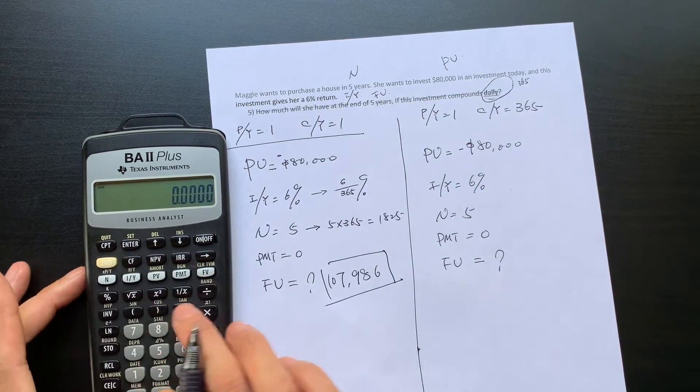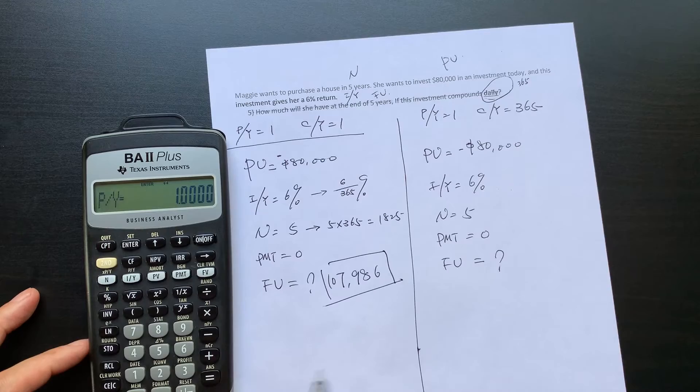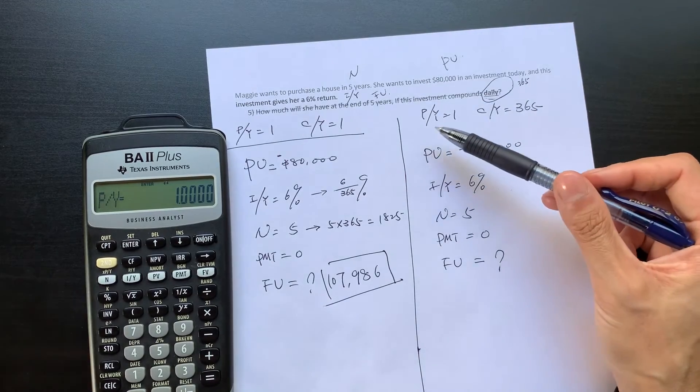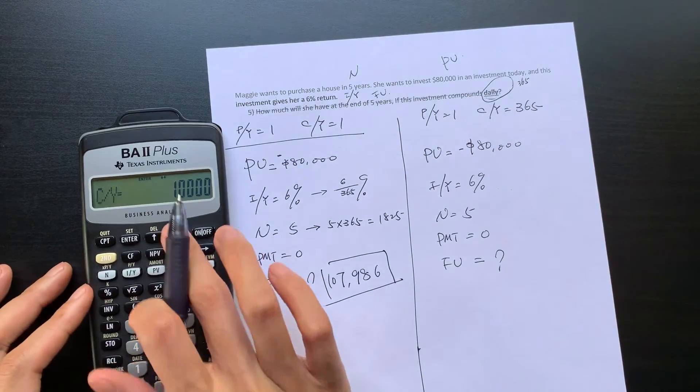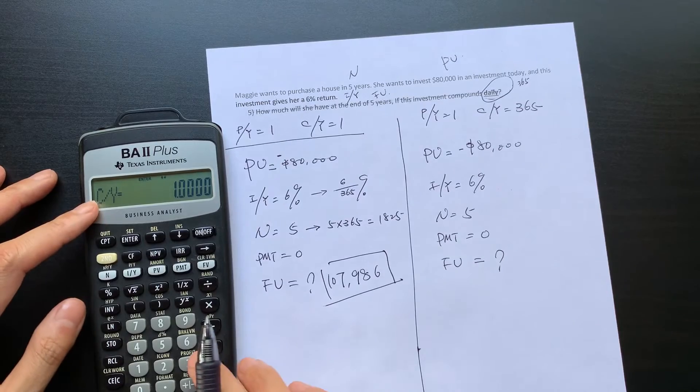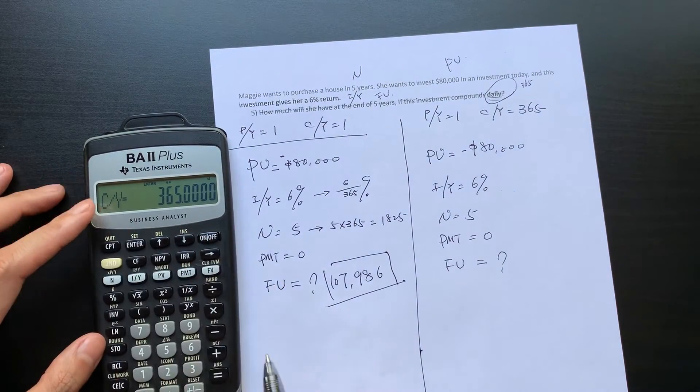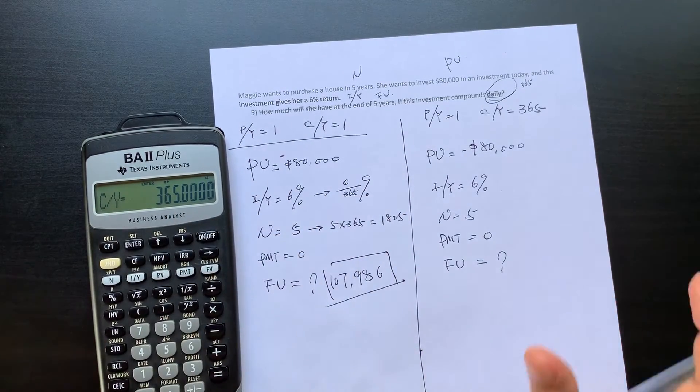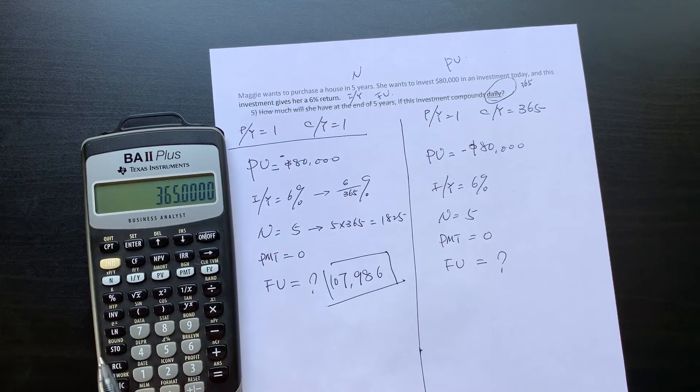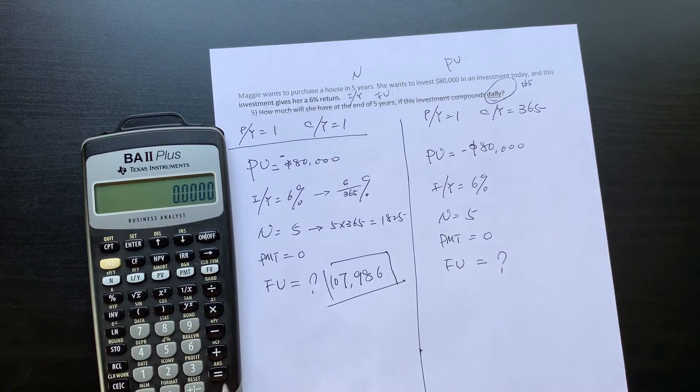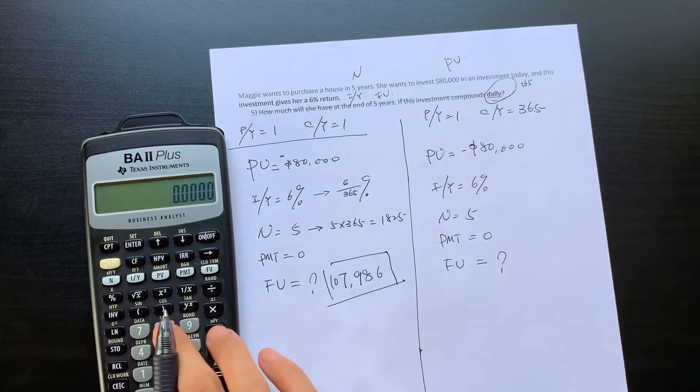So you can simply just go second. Always leave your PY at 1. Then we adjust the CY equal to 365. Then enter. So now your calculator says I'm compounding at a daily. So once you've done that, you don't need to adjust your number.